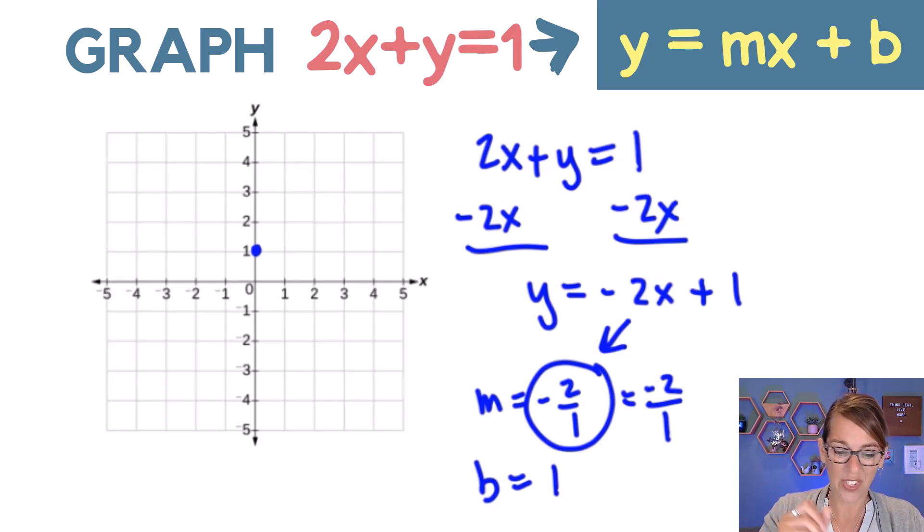So I want to go negative 2 in the y direction, and then positive 1 in the x direction and there's my second point. I really just need 2 points for that line. Let's plot it. So there is our line, double arrows since I've got infinitely many solutions on that line.